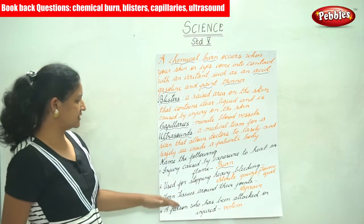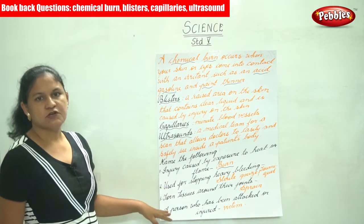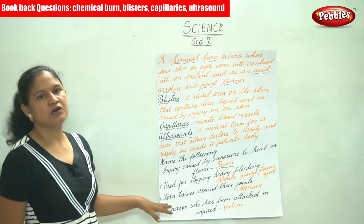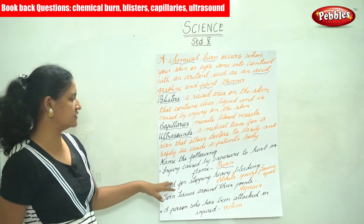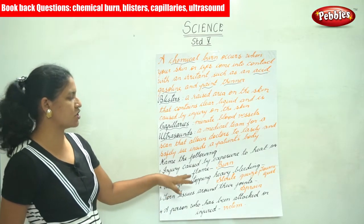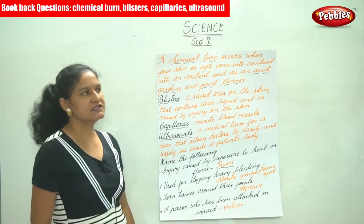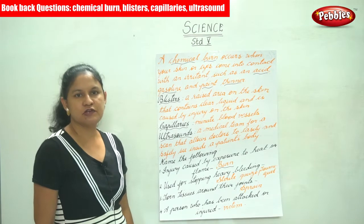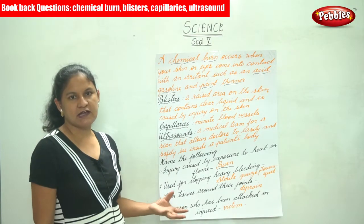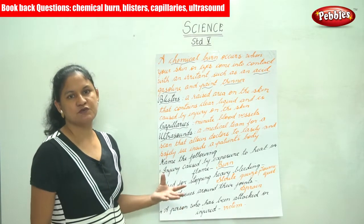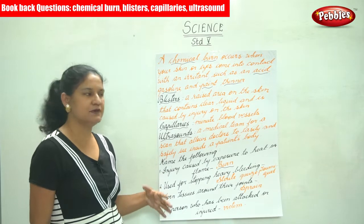Next: what do we use in order to stop heavy bleeding? It is a tourniquet. A tourniquet is used for stopping heavy bleeding.